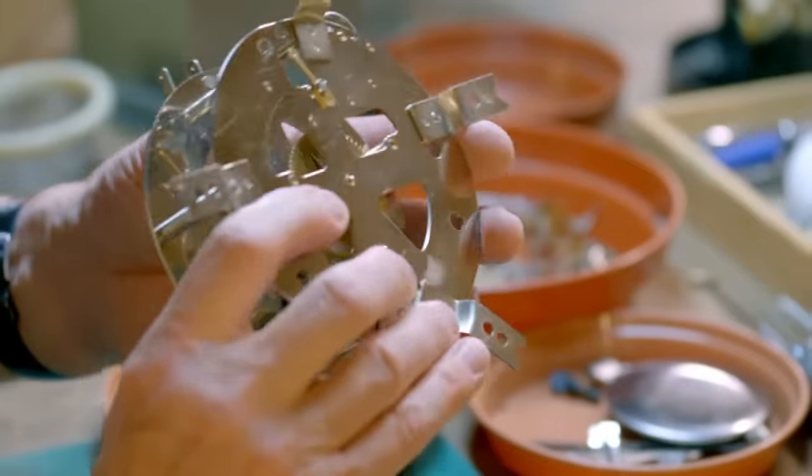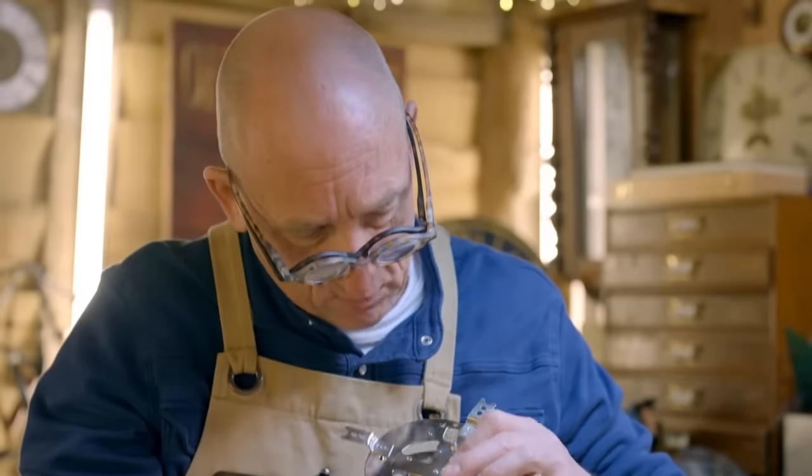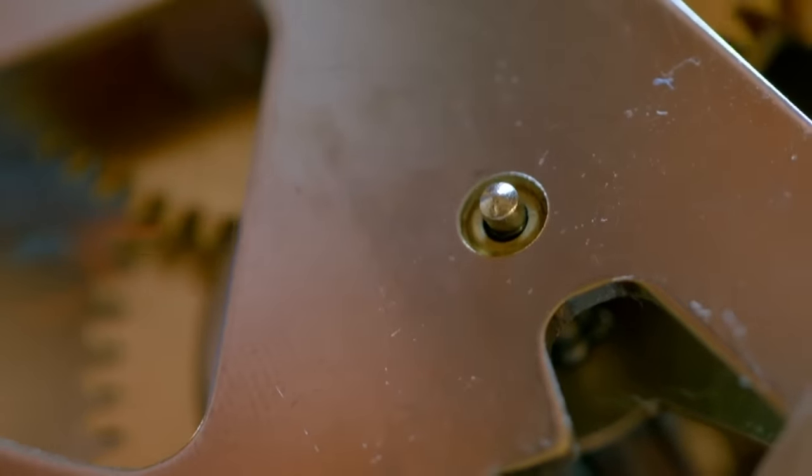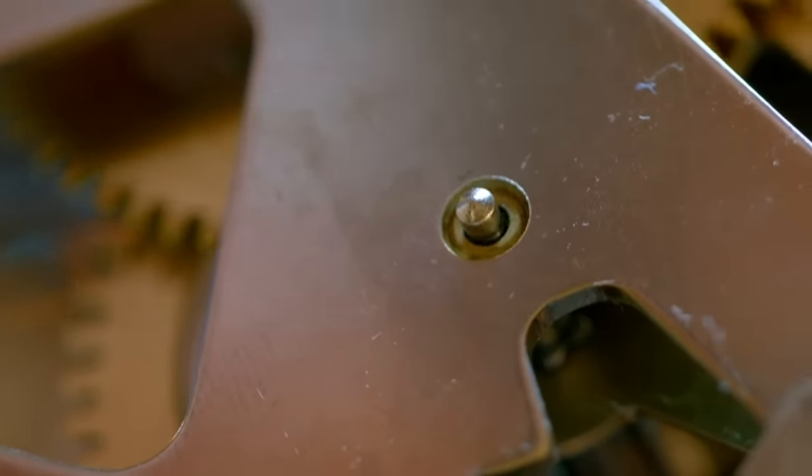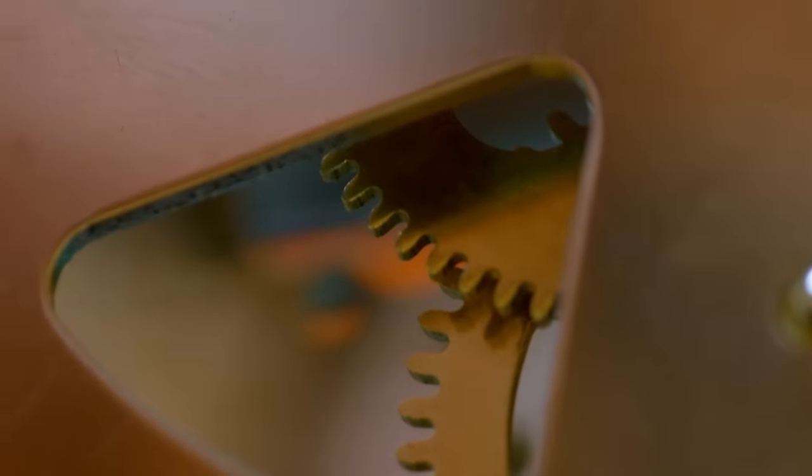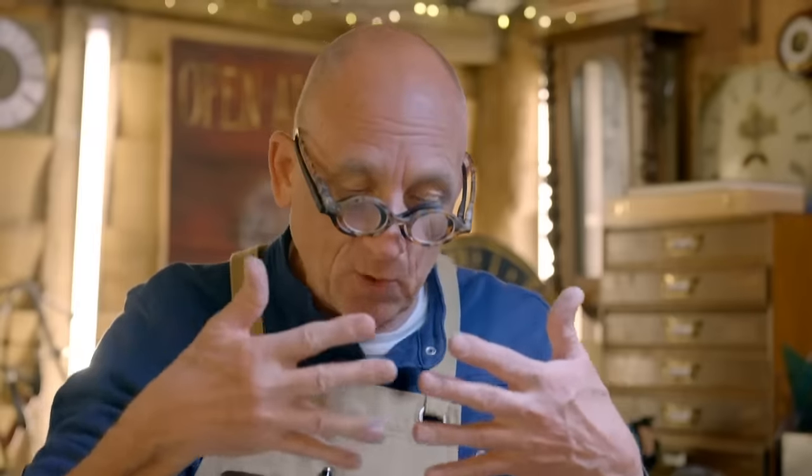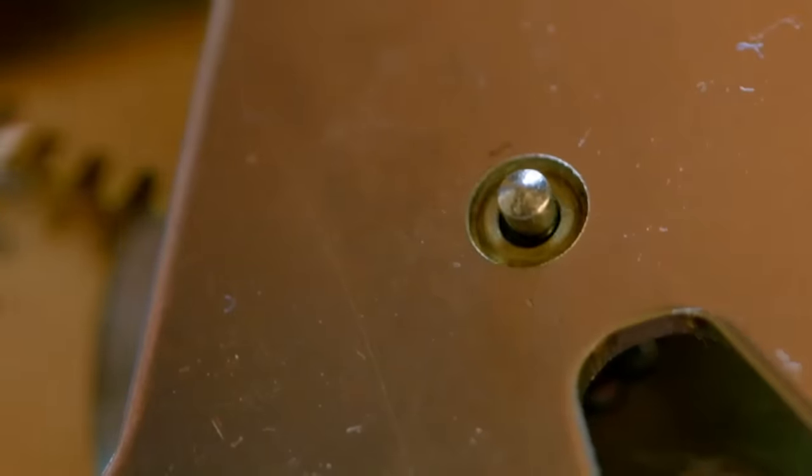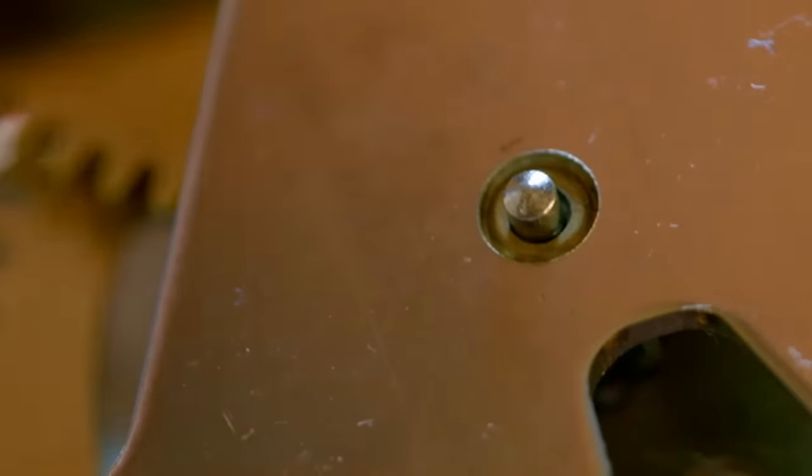You've got this one pivot hole with probably about almost half a millimeter of wear, which in clock terms is huge. If that's worn, then the wheels don't mesh properly. Instead of nicely meeting like that, they actually start hitting on the top like that and causing a lot of friction.